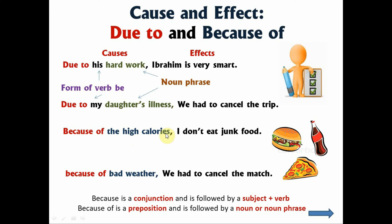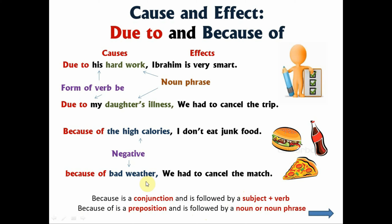Even with because of, we have the noun phrase. But with due to, it is normally followed first by the form of a verb be — in these examples: due to his hard work, due to my daughter's illness. With because of, we use it usually to emphasize something that is negative — for example: because of the high calories, I don't eat junk food; because of bad weather, which is also negative, we had to cancel the match. The difference between because and because of is that because is a conjunction followed by a subject plus verb, whereas because of is a preposition followed by a noun or noun phrase, as shown here.